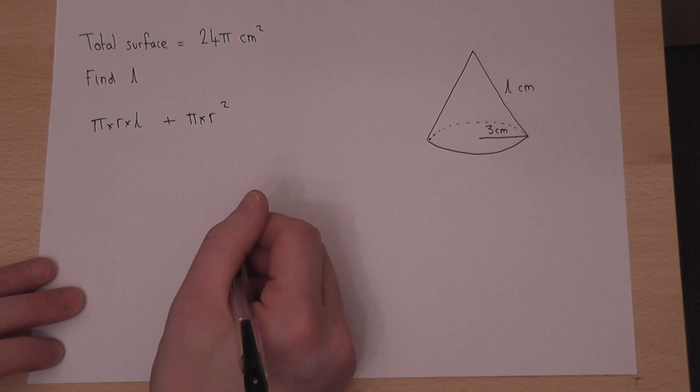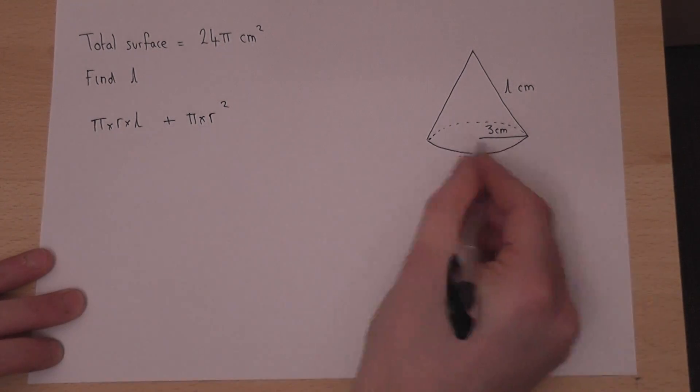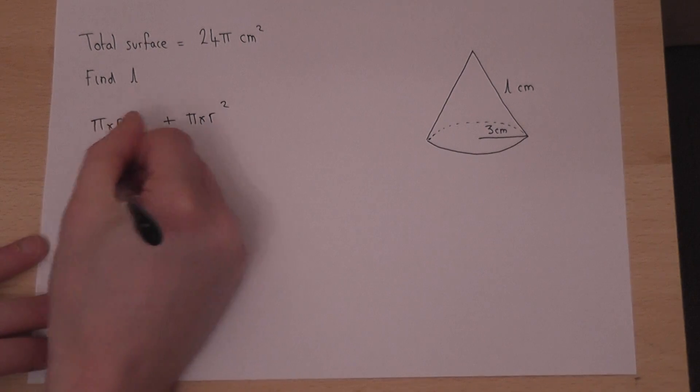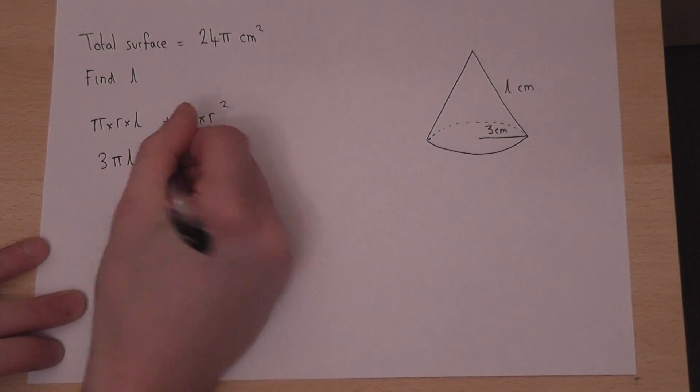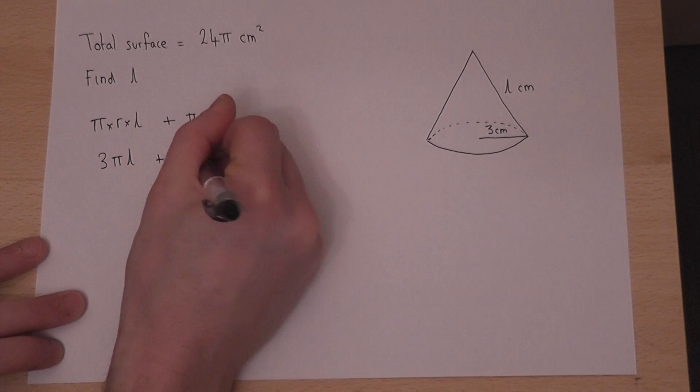So for our cone, π times R times L. R is 3, so this is 3πL, 3 times π times L. And R squared is 9, so plus 9 lots of π.